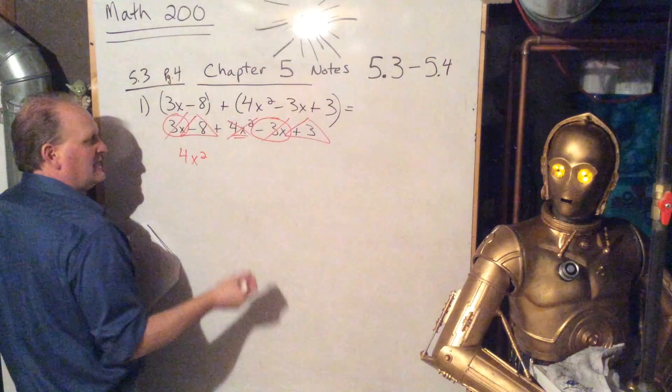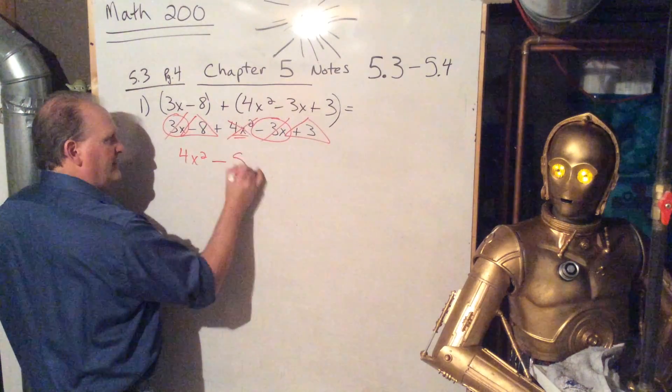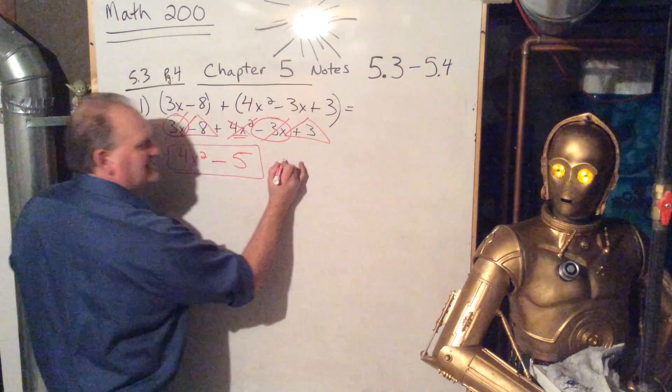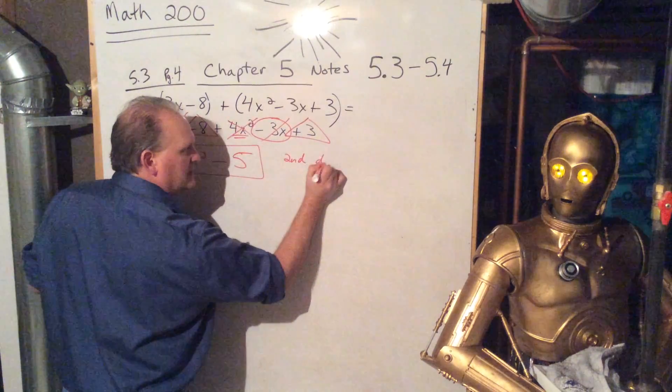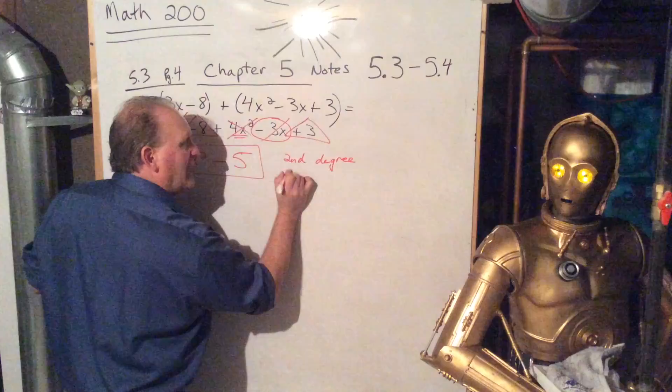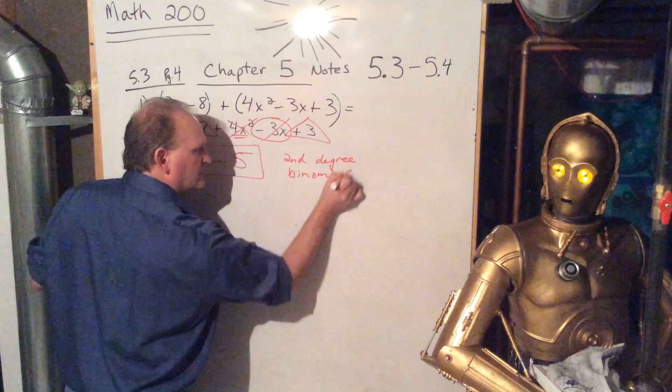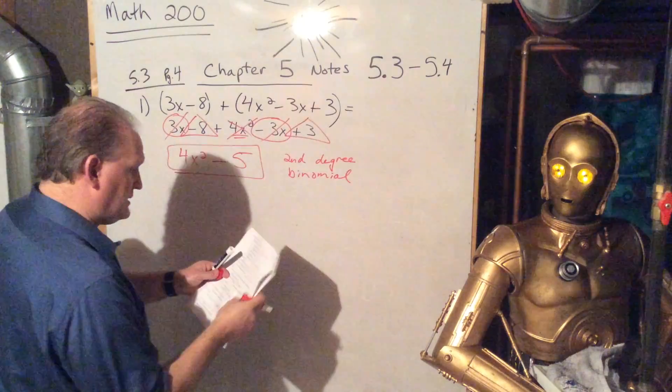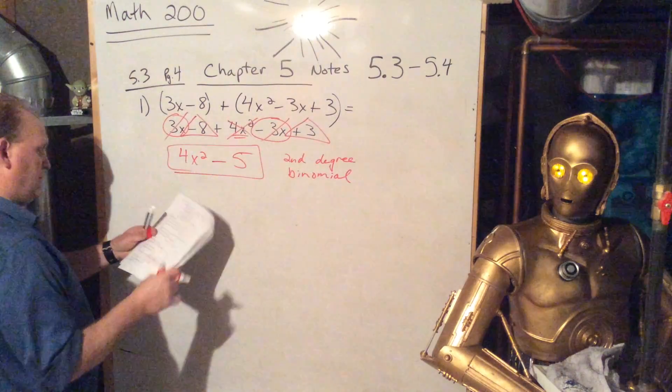There's nobody that matches with it, so that just goes down as such. Negative 3x matches, ooh, with positive 3x. So those die. Gone. That's positive and negative. They wipe each other out. And then negative 8 and positive 3. We combine those like terms. That's a negative 5. So there we are. That's our answer. Our answer is a second degree binomial. All right, second degree binomial.